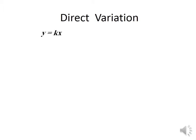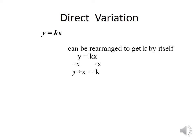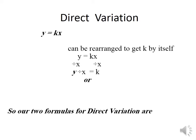In direct variation, y equals k times x, where k is a non-zero constant. We can divide both sides by x to find the value of k. So we can say that y divided by x equals k, or k equals y over x. The direct variation formula is either y equals k times x, or y over x equals k — meaning y over x equals a constant all the time.